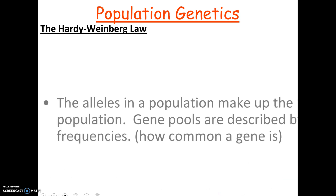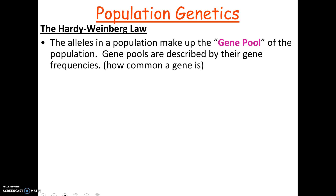The Hardy-Weinberg law — we're going to talk about this in a lot of detail. The alleles of a population — remember, an allele is a form of a gene, like big B and little b. The alleles of a population make up what's called the gene pool. So all the genes in the population are the gene pool, and we can describe these by what are called gene frequencies, which are how common a particular gene is.